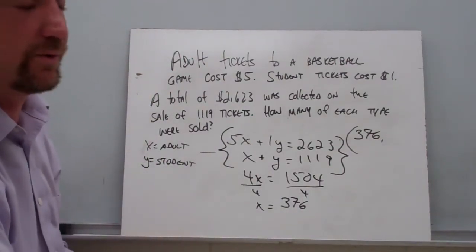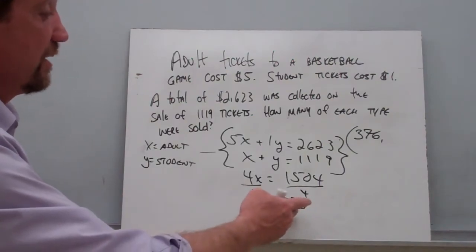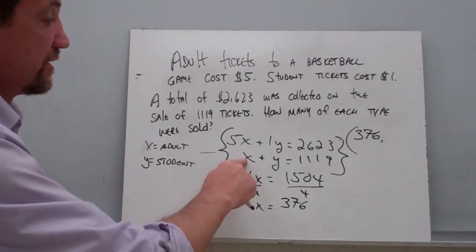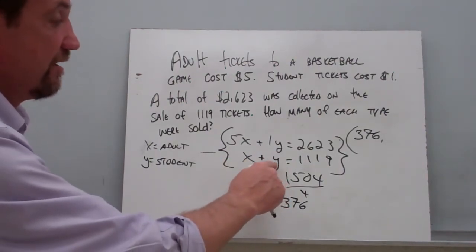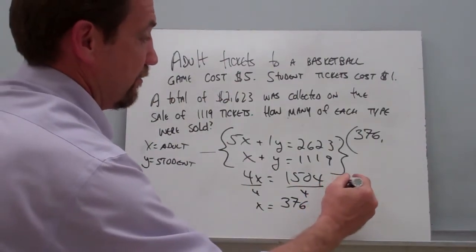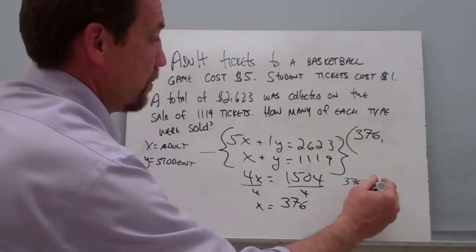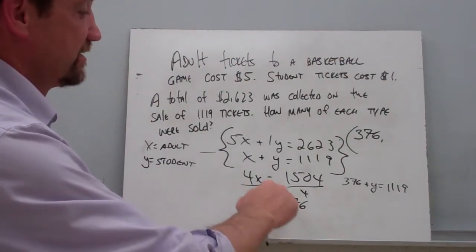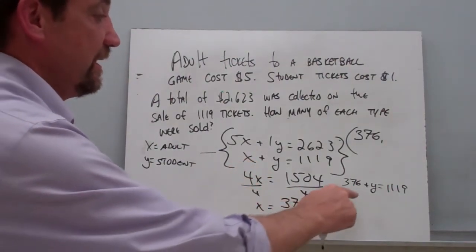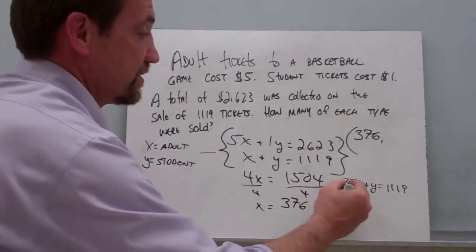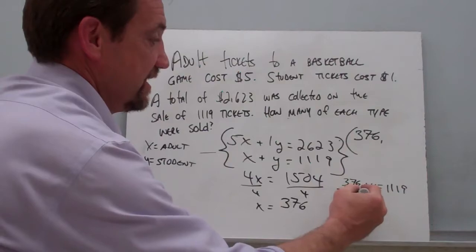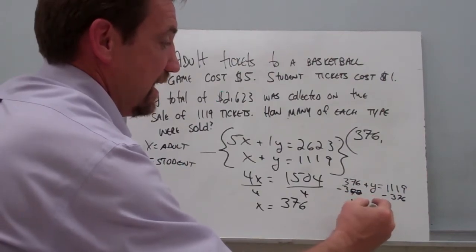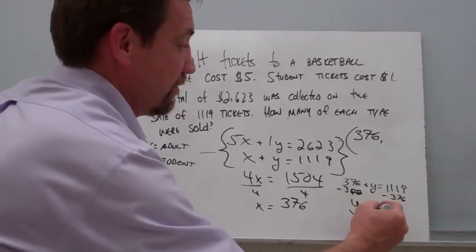Now we've got to find the Y value to round out this situation. To do that, we're going to plug in our 376 into the bottom equation. So 376 plus Y equals 1,119. We've plugged in 376 for X, and now let's figure out what our Y value is. We'll subtract 376 from both sides, and we end up with Y equals 743.